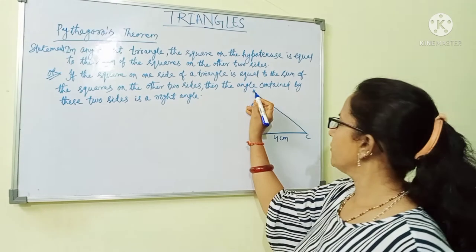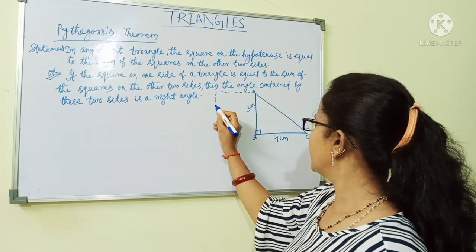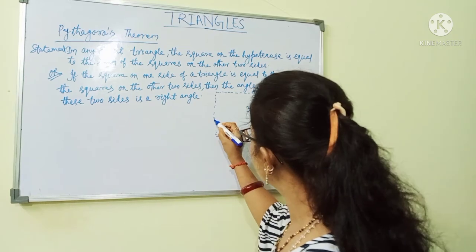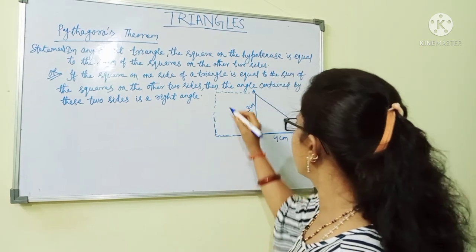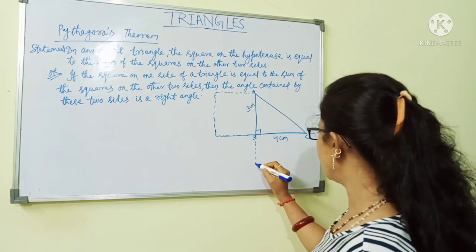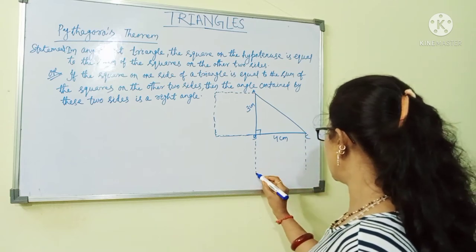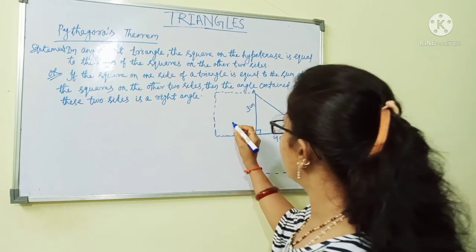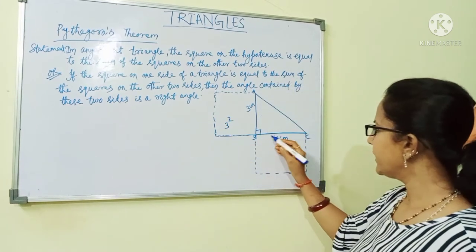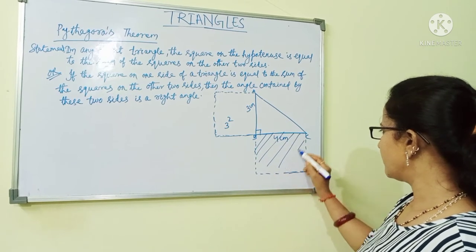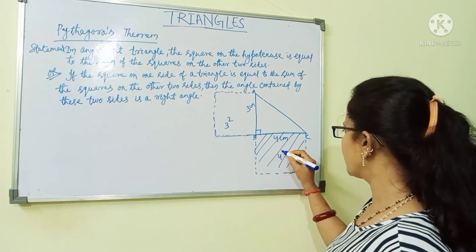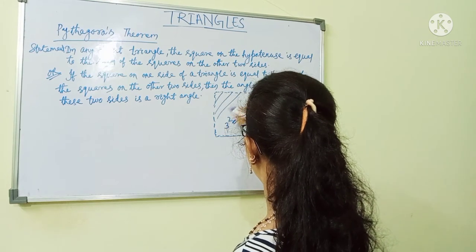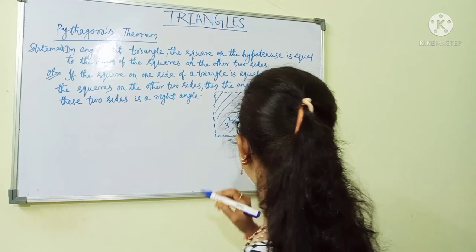So, if I draw one square formed by the 3 cm side, I am taking one square here. And by taking 4 cm as a side, I will draw a square here. What will be the area of this square? That will be 3 squared. And what will be the area of this? This area will be 4 squared, which is equal to 16. And 3 squared is equal to 9.